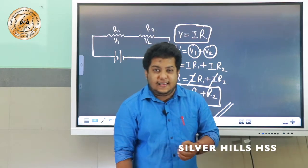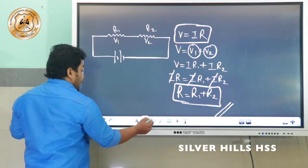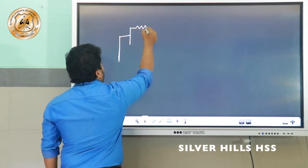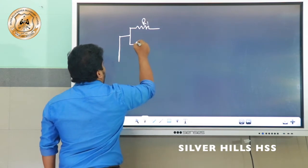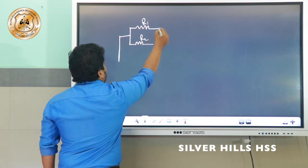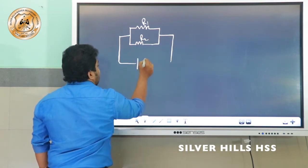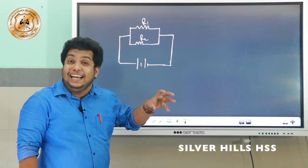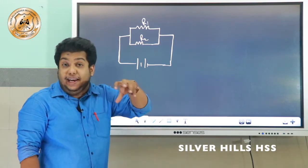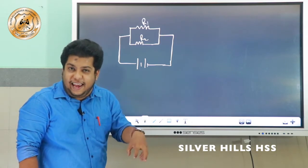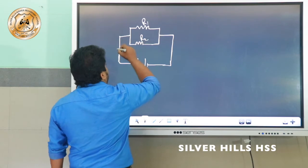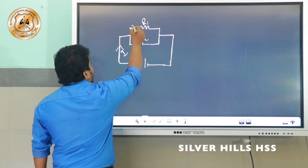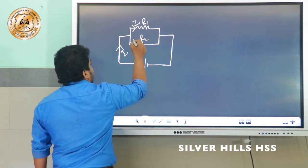Now we want to discuss parallel combination. Consider that two resistors R1 and R2 are connected in parallel to a source. In parallel combination, voltage will be same but current will be different. The current flowing is taken as I, and at the junction point I will split into two components: I1 through R1 and I2 through R2.